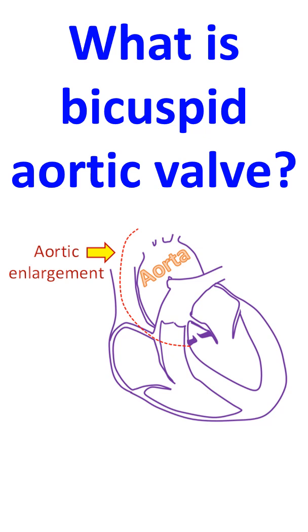An echocardiogram, or ultrasound study of the heart, is useful in assessing progressive enlargement of the aorta as well as the stenosis and regurgitation of the aortic valve, if present.